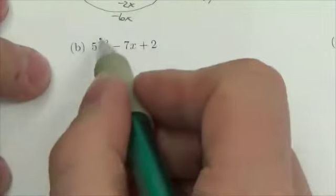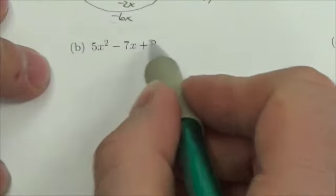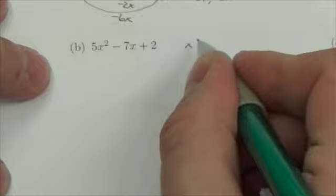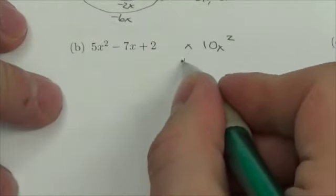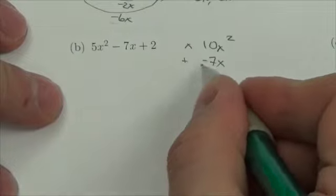We have to factor this, and what we're going to do is take that first term and multiply it by the last term. So we're going to be looking for two numbers whose product is 10x² and whose sum is negative 7x.